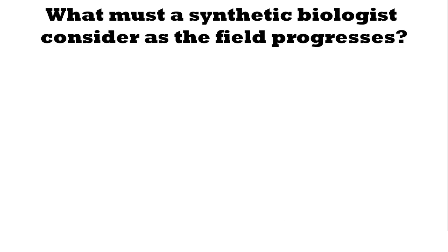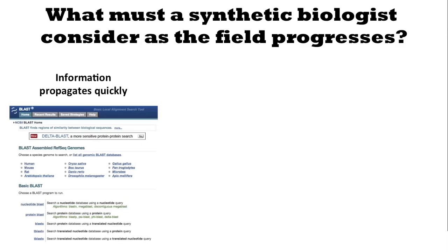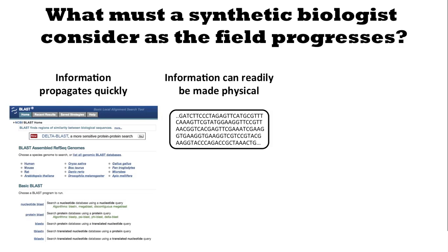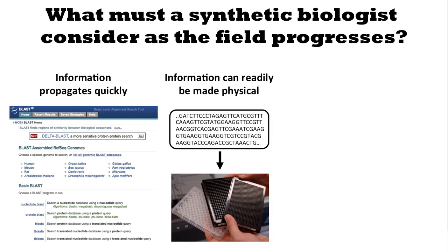So what must a synthetic biologist consider as the field progresses? We need to remember that information propagates quickly, so what we produce is going to be available to a very large audience. This information can readily be made physical — given a sequence, it's becoming very easy to order actual genetic material based on that sequence. There are also techniques available in the lab that are better and better at taking a sequence and turning it into DNA.